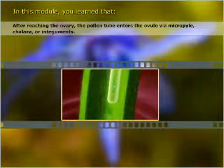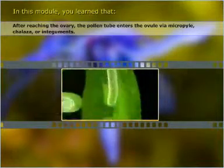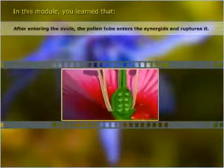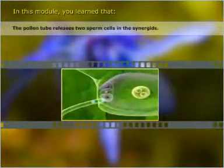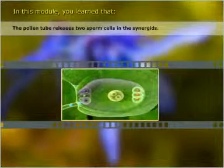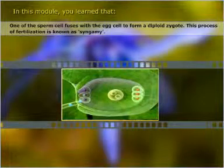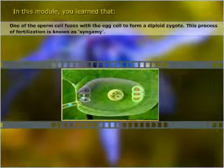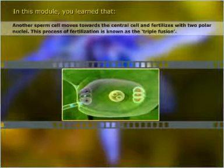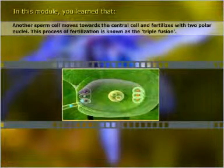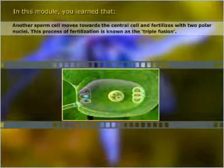After reaching the ovary, the pollen tube enters the ovule via micropyle, chalaza, and integuments. After entering the ovule, the pollen tube enters the synergids and ruptures them, releasing two sperm cells. One of the sperm cells fuses with the egg cell to form a diploid zygote — this process is known as syngamy. The other sperm cell moves towards the central cell and fertilizes the two polar nuclei, a process known as triple fusion.